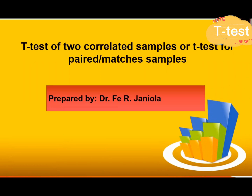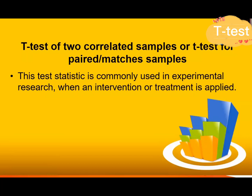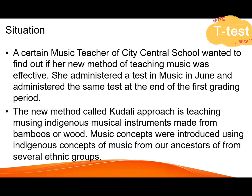So what is this? This test statistic is commonly used for experimental research when there is an intervention or treatment that you are going to apply. After you have your pre-test, you have your intervention, and then you gather your post-test. Here is another situation applying this statistical treatment.